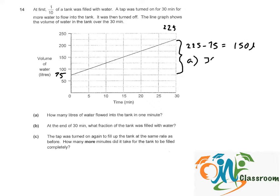In 30 minutes we have 150 liters, so in one minute, 150 divided by 30, the rate of water flow would be 5 liters per minute.